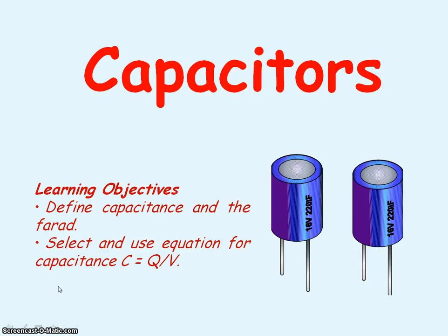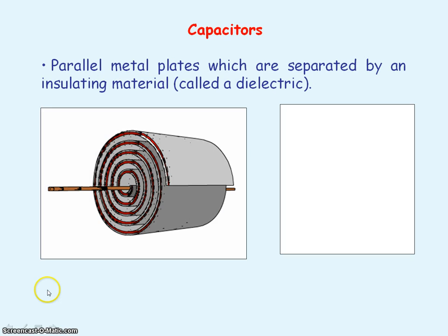We're going to be looking at capacitors. The capacitor is made up of two parallel metal plates which are separated by an insulating material which we call a dielectric.